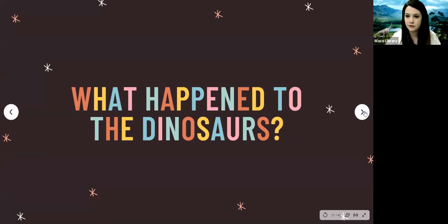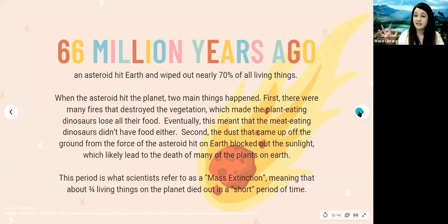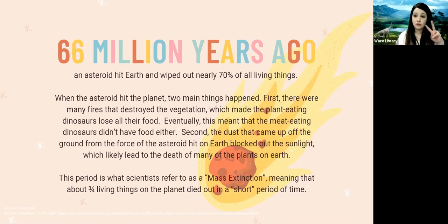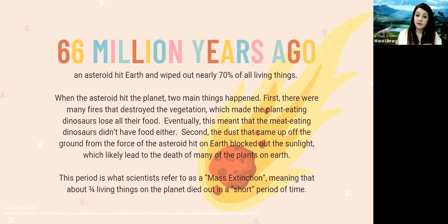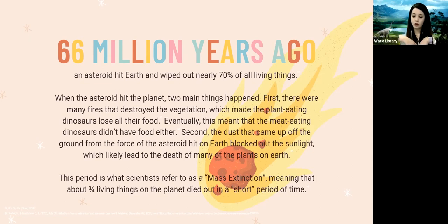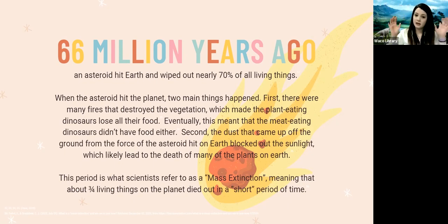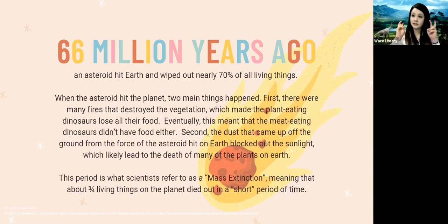You're probably wondering what happened to the dinosaurs — why aren't they here anymore? About 66 million years ago, an asteroid hit Earth and wiped out about 70% of all living things — plants, animals, everything. Two main things happened: first, the asteroid caused fires all over the planet and destroyed vegetation, so plant-eating dinosaurs lost their food and died out, meaning meat-eating dinosaurs had no food either. Second, so much dust came up from the force of the impact that it blocked out all sunlight, leading to the death of many plants. Scientists refer to this as a mass extinction — about three out of four living things on the planet died in a relatively short period of time.